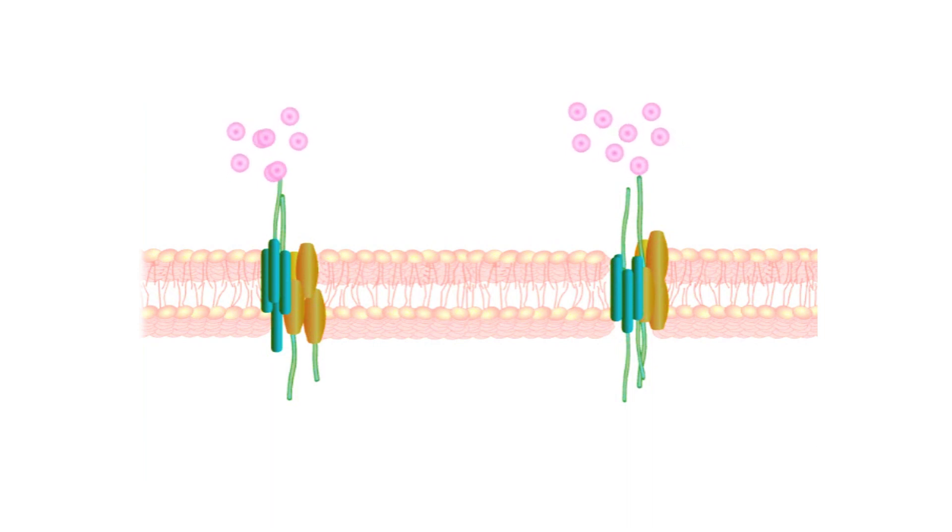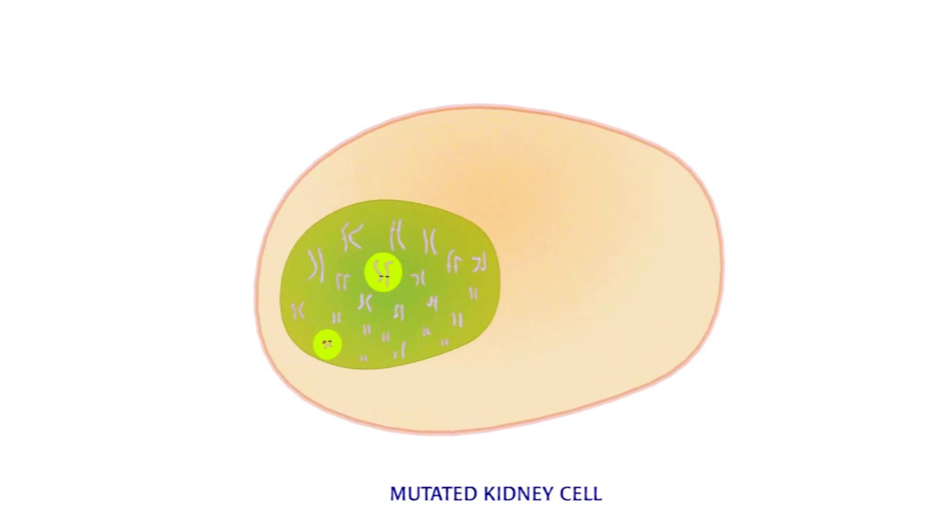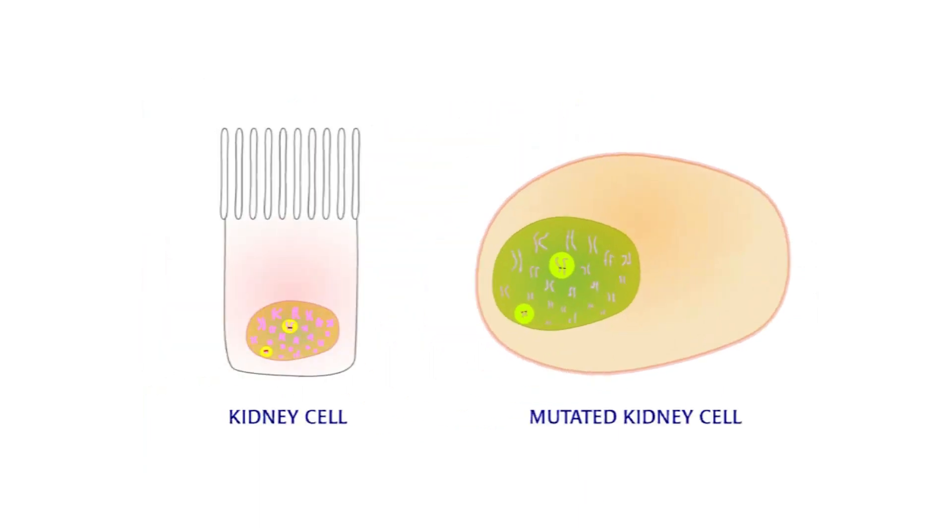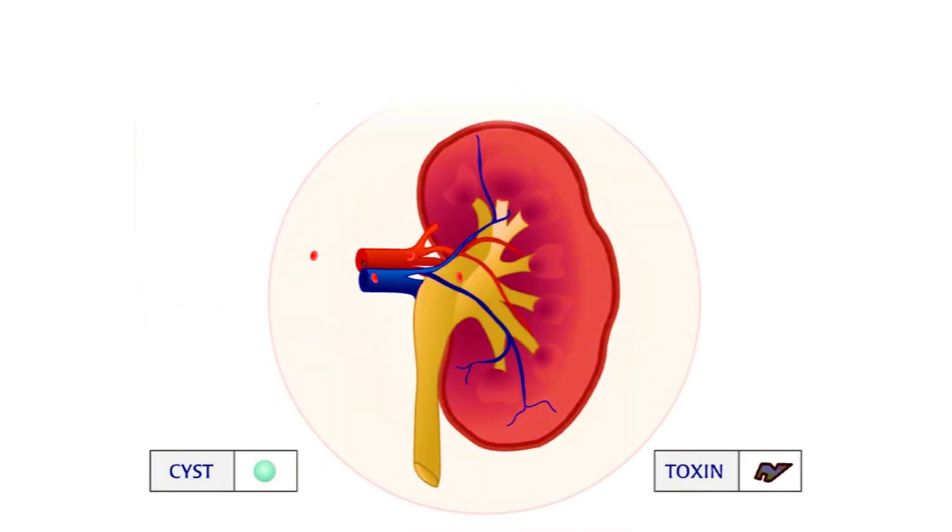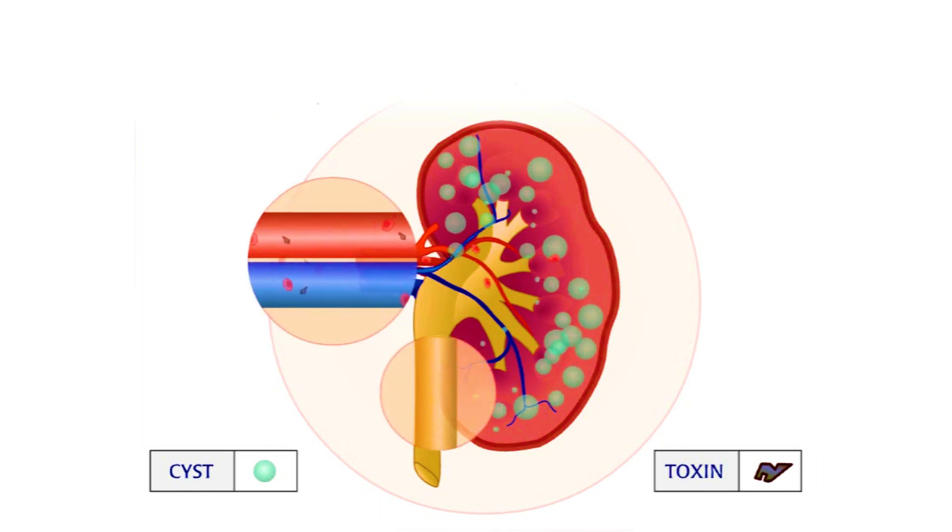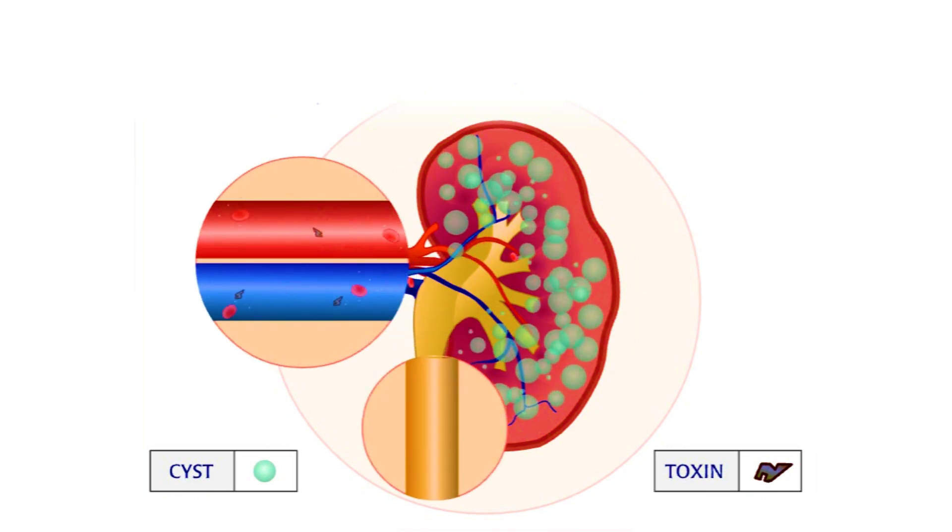These undetermined cells do not have any blood filtering abilities and grow into cysts in the kidneys. As the cysts grow, their size can also block the ability of neighboring kidney cells from filtering blood. Eventually the entire kidney may fail, at which point the patient will require dialysis and a kidney transplant.